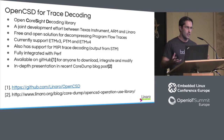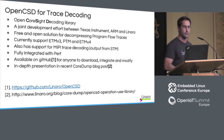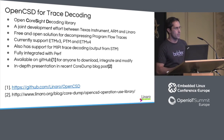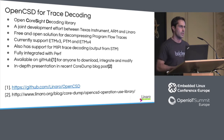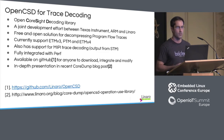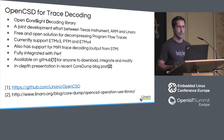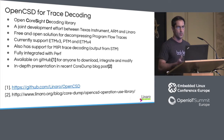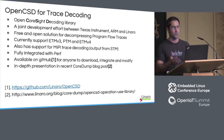That covers everything required for the kernel side of the solution. This leads us to OpenCSD — the OpenCoresight Decoding Library. It is a standalone library that allows anyone who has Coresight traces to decode the streams. It doesn't even have to be coming from the Linux kernel or our framework — any Coresight traces on any SoC that conforms to the spec will be handled by the OpenCSD library.